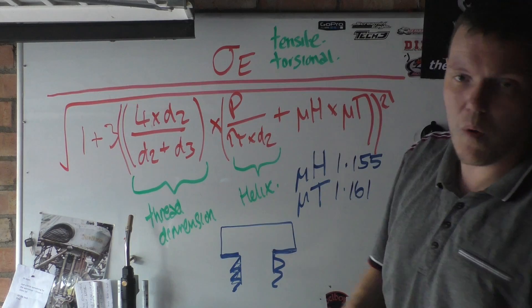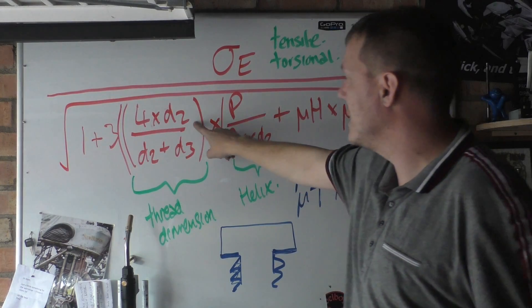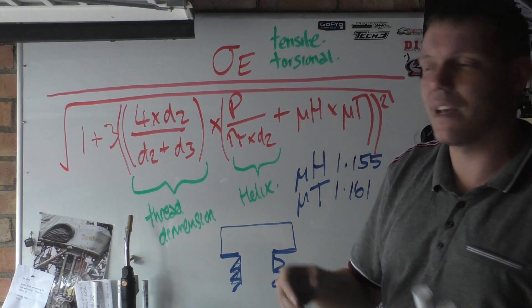And then basically we have the size. So all these D's, these are all diameters. Minor diameter, major diameter, stuff like that.